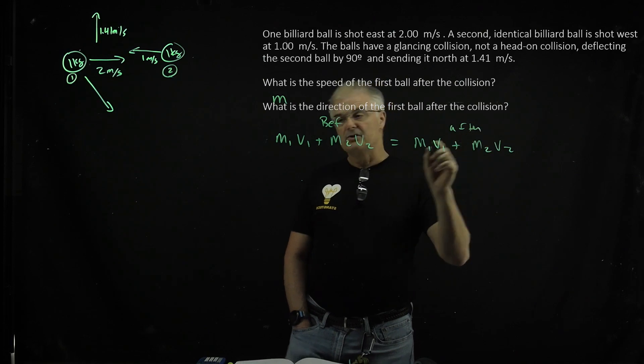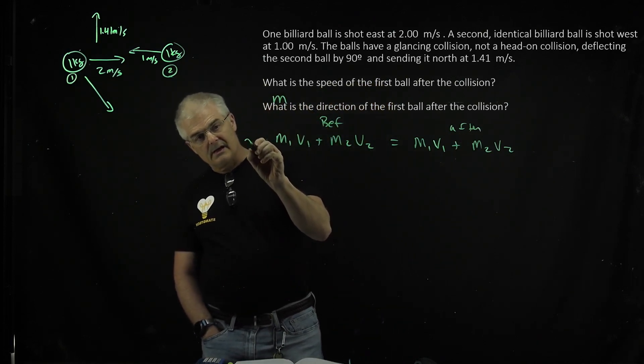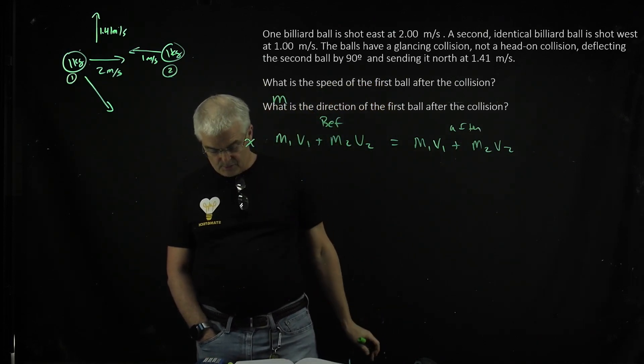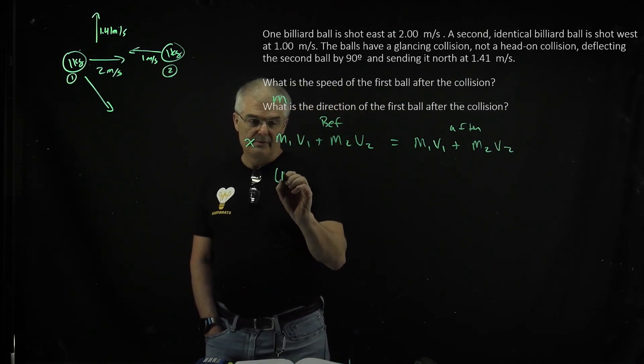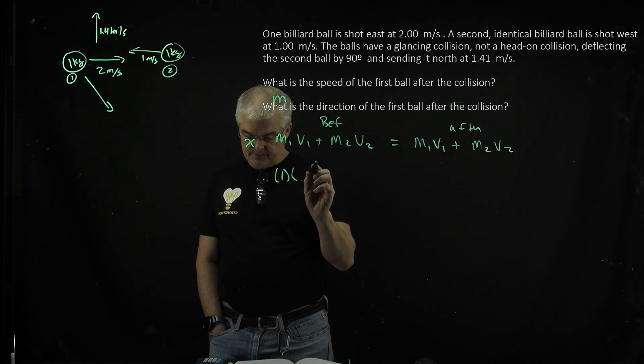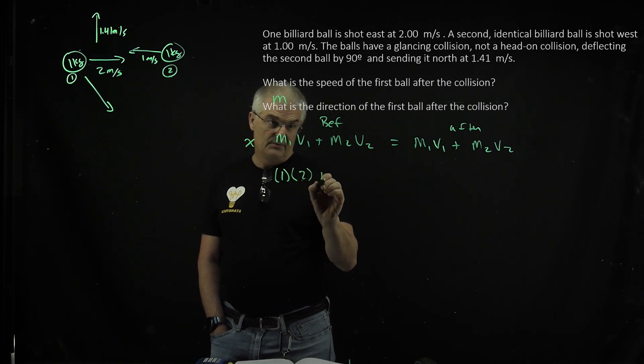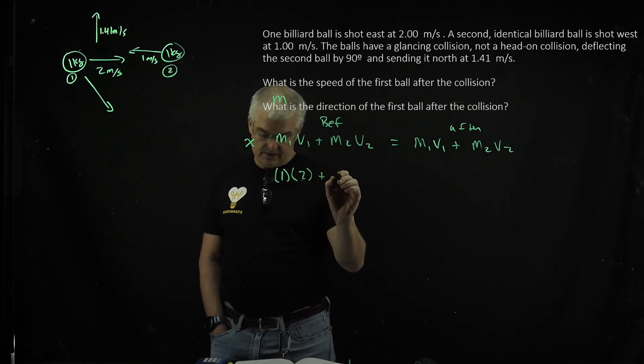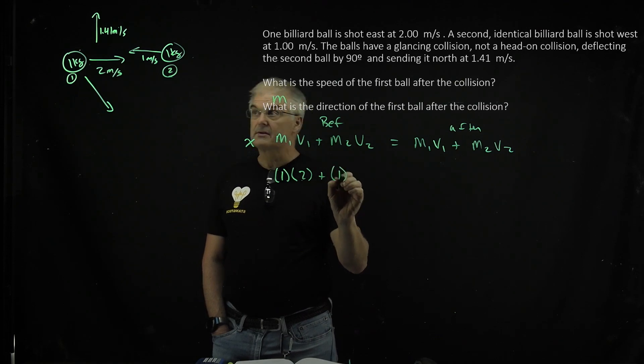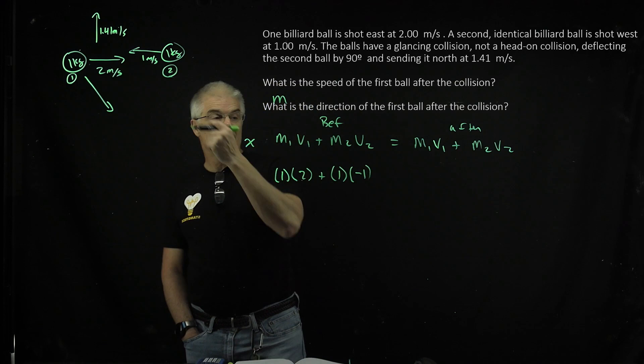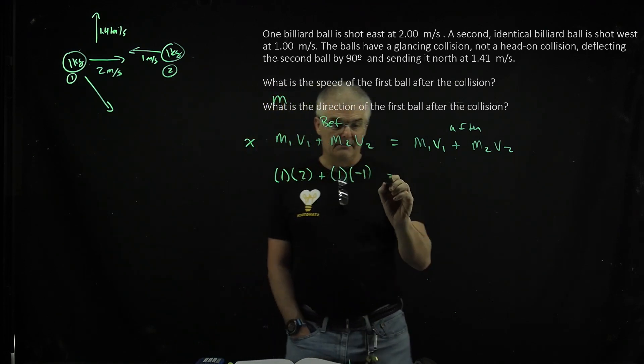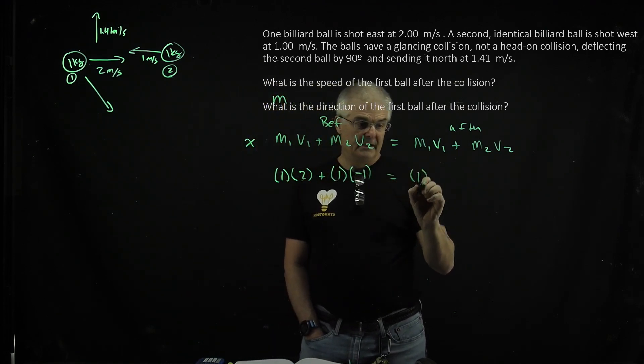But we have to do this in the x and in the y direction. So let's do it in the x direction. I can say 1 is your mass times the velocity of 2 plus, now watch this, 1 is your mass, right? The velocity is negative 1 because he's moving in the negative direction.